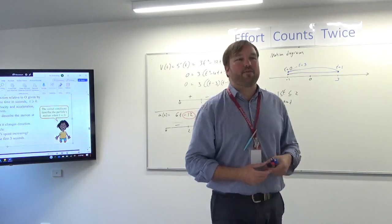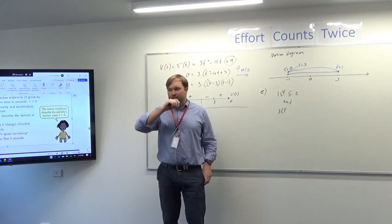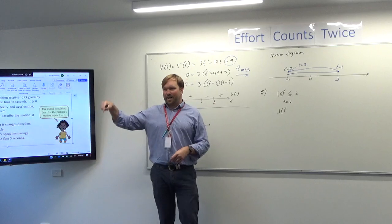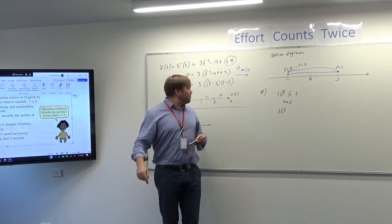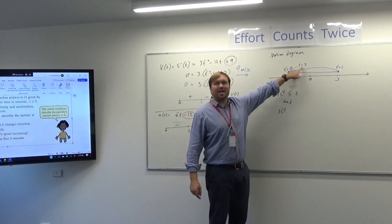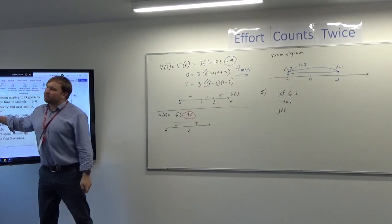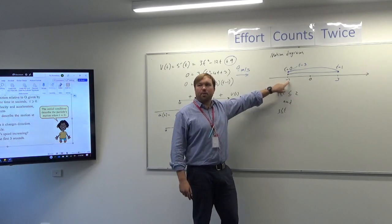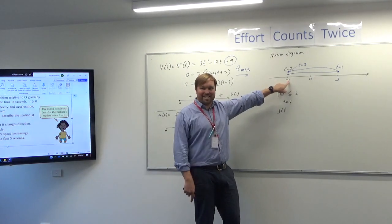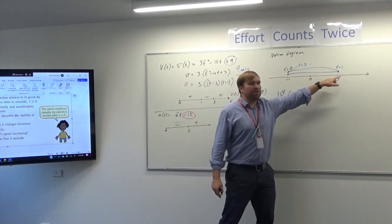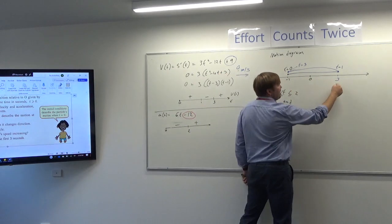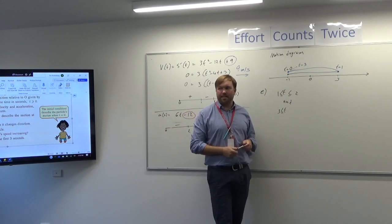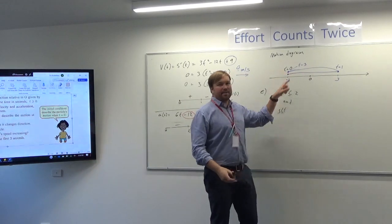Total distance travelled in the first 3 seconds. Note: total distance travelled is different from where the particle is after 3 seconds. Where it is after 3 seconds is just s(3) = −1, and many people would incorrectly answer minus 1. But that's not the distance travelled — that's just where it is. The distance travelled is shown by the motion diagram. It went from −1 to 3 and back to −1. So the total distance travelled is 4 metres that way and 4 metres back — 8 metres in total.